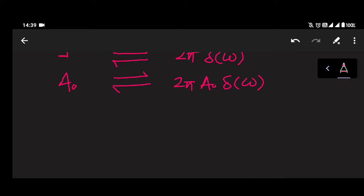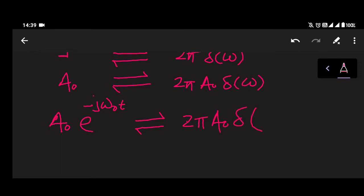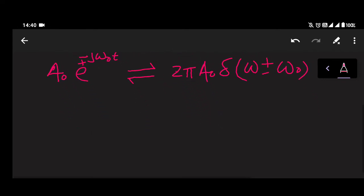Now we have seen one important property called frequency shifting. If we have a₀·e^(−jω₀t), then the Fourier transform will be 2π·a₀·δ(ω + ω₀). And if we have a₀·e^(+jω₀t) — if we have plus then it will be minus — so it will be 2π·a₀·δ(ω − ω₀).